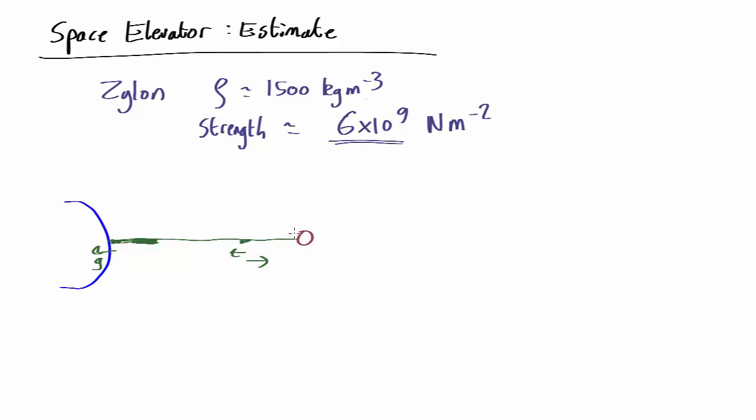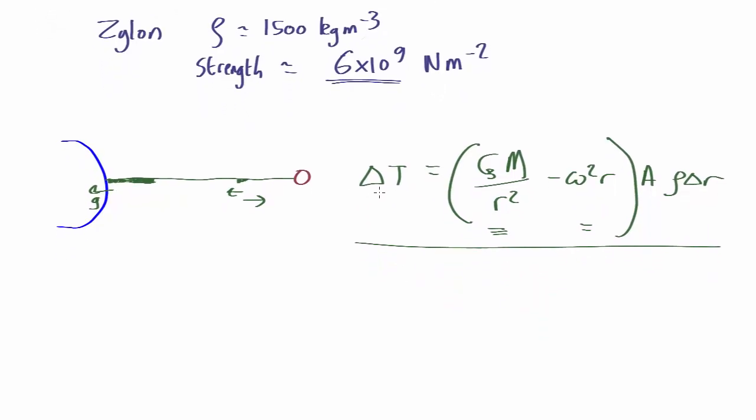If we remember our equation, now this term is going to be the strongest. That one's going to be smaller. This goes up as you go further out. This one goes down, but this one's going to be the dominant one. So what that's telling you is the extra amount of tension per unit weight, the slope like dT over dr, is going to be most here.